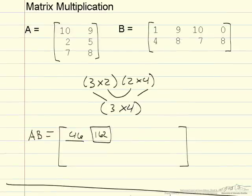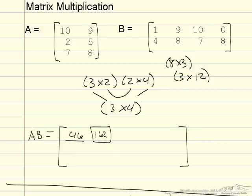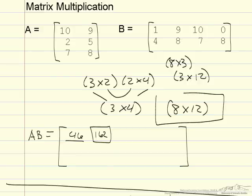You have to do that for every single element in AB. Now imagine if you had an even larger matrix — say multiplying an 8 by 3 with a 3 by 12. Your final matrix would end up being 8 by 12, which would be extremely tedious to calculate by hand.